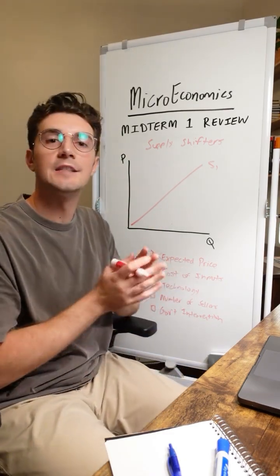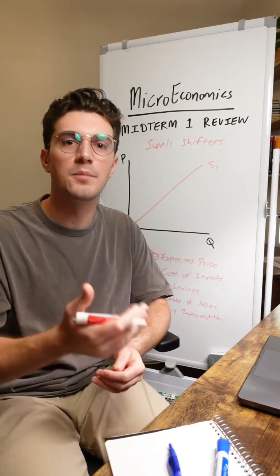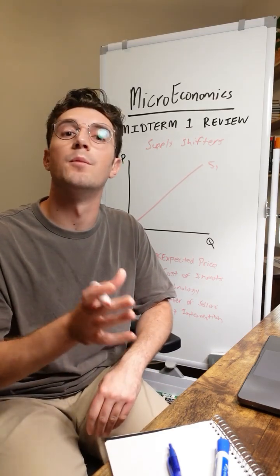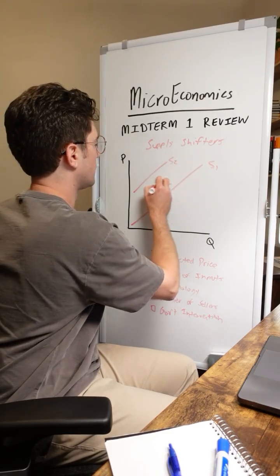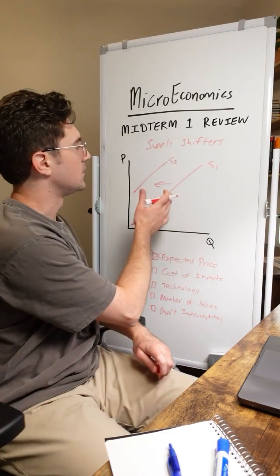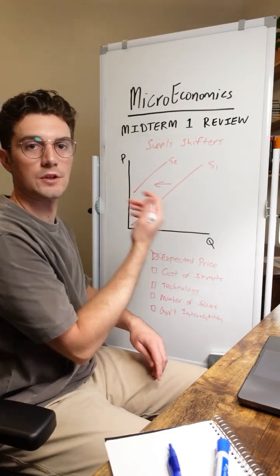All right, next up here is cost of inputs. As a producer, if the inputs that you use to create your good become more expensive, well then you're not going to be able to supply as much of it to the market. And in turn, your supply of the good will decrease. We'll shift it to the left.